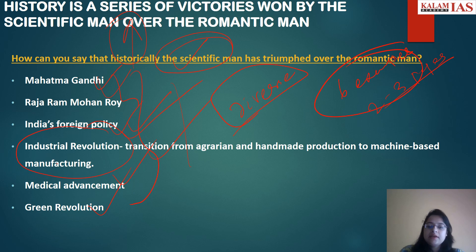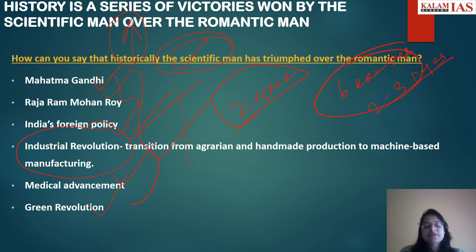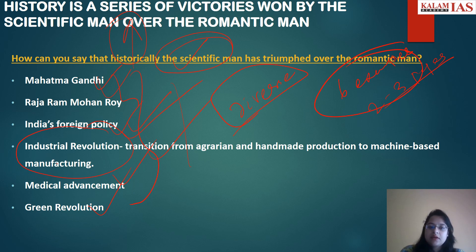Then you come to medical advancement — vaccines, antibiotics, and medical procedures. How they contributed to the triumph of scientific methods over illnesses which were thought to be insurmountable. There were many epidemics and deaths, but due to breakthroughs in vaccine technology and antibiotics, there was a triumph of scientific methods. Then you can talk of the green revolution — the practical application of scientific methods to agriculture, leading to increased food production through high-yielding varieties of seeds, pesticides, and fertilizers, helping to address food shortages worldwide.